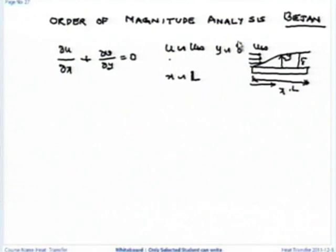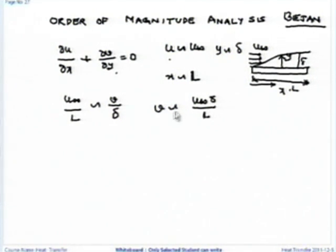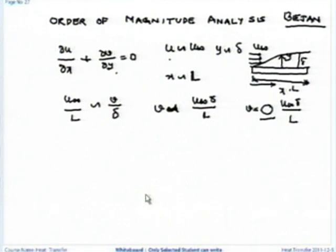Let us find the order of v from the continuity equation. The order of del u is u-infinity, del x is L. These two are of the same order, equal to one another. This is of the order of v upon delta. So v is of the order of u-infinity delta by L. It is not equal to — I am using tilde, meaning it is of the order of.